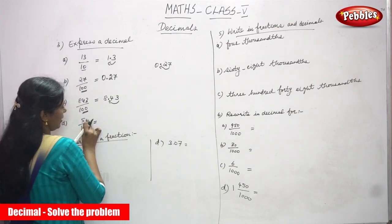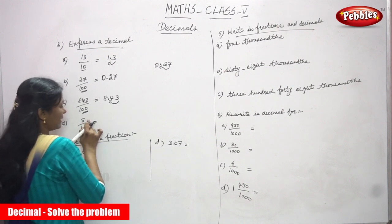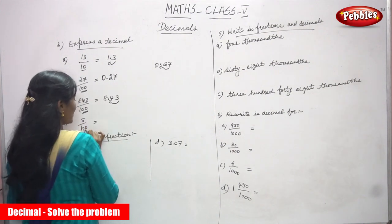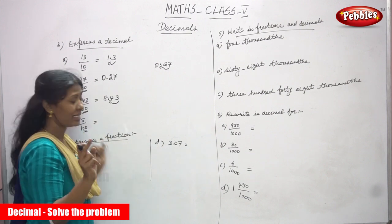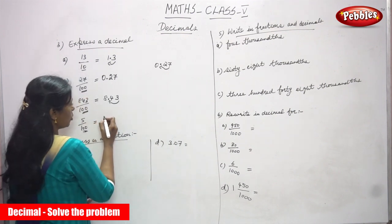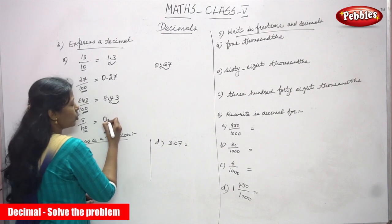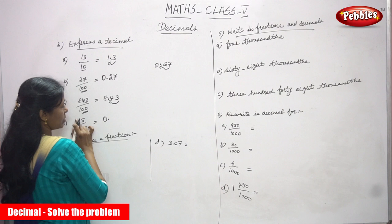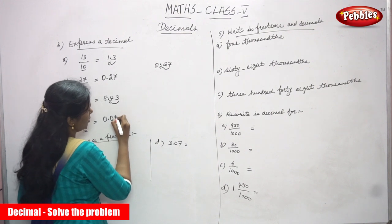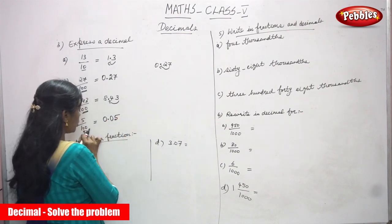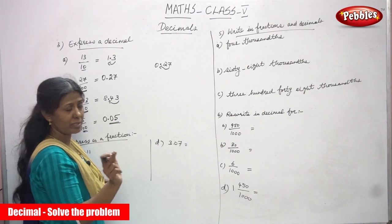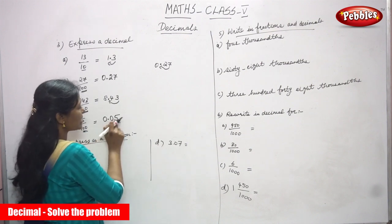Now 5 by 100. Here 5 is the numerator and 100 is the denominator. There are 2 zeros in the denominator, but the numerator has only 1 digit. You need one more digit, so you add a zero. First write 0, then put a point, then write 0 and 5. The answer is 0.05.